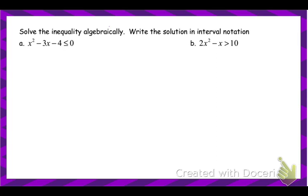This first one is already equal to zero and we can factor. What multiplies to −4 and adds to −3 would be −4 and 1, giving us (x − 4)(x + 1). Once we know our zeros, we mark those on a number line and pick some test points. This process will be used in later units, so it's important to understand even if you notice some patterns.